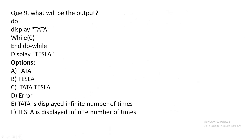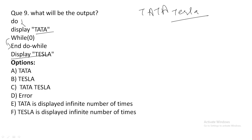Next question: do { display 'tata' } while(0). We enter the do-while loop and display 'tata'. The condition is 0 (false), so we exit the loop. Then display 'tesla'. Since there is no newline operator between them, both are printed simultaneously. Final output: 'tatatesla'.